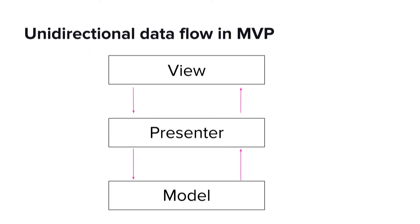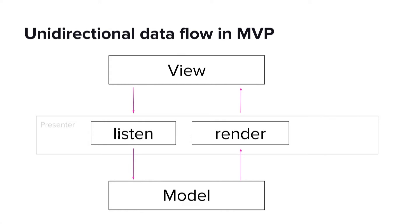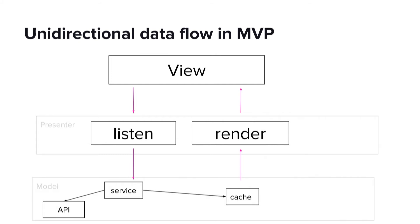Many Android applications today are architected in some variant of a model view presenter architecture. So we're going to talk about what it looks like to enforce a unidirectional data flow in the context of MVP. The first step is to enforce a single exit point and a single entry point to the view. The key difference from a bidirectional data flow is that the exit point of the view is not state — it's an action that the presenter listens to and uses to update the model. On the entry point of the view, the view is listening to state changes from the model through the presenter. In our model layer, we might have a service abstraction that can talk to both the network and the local state.